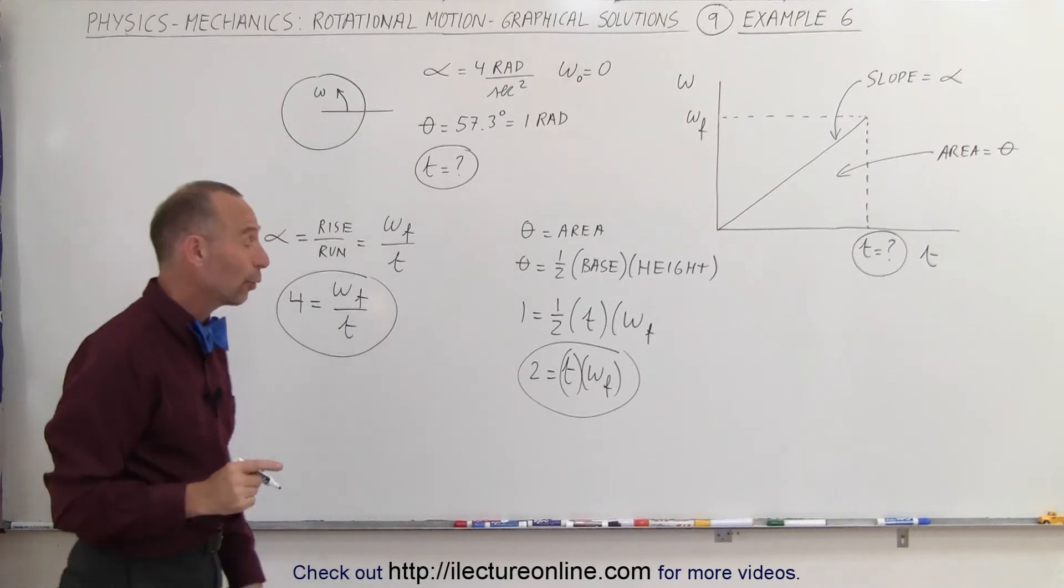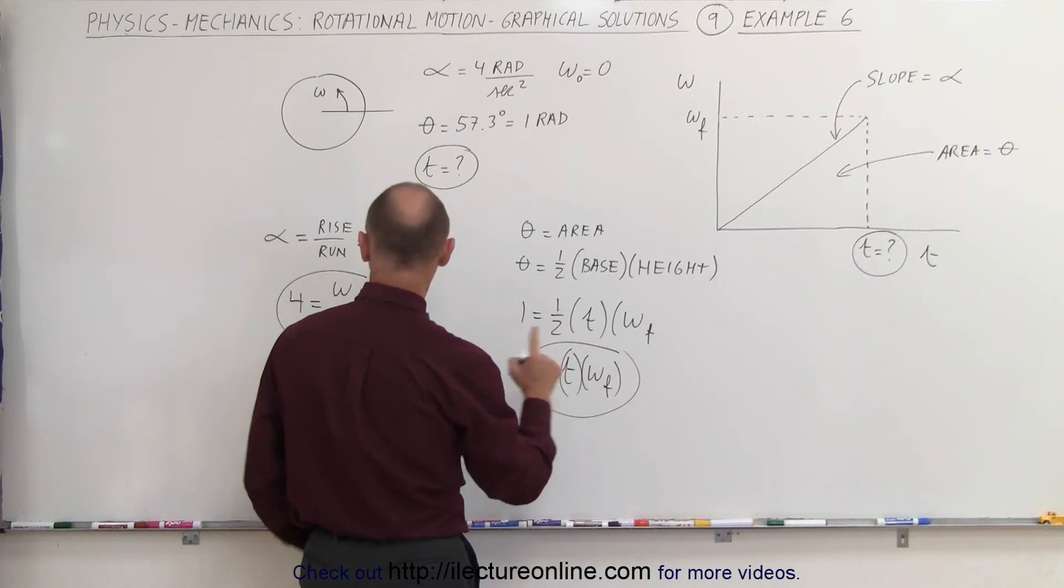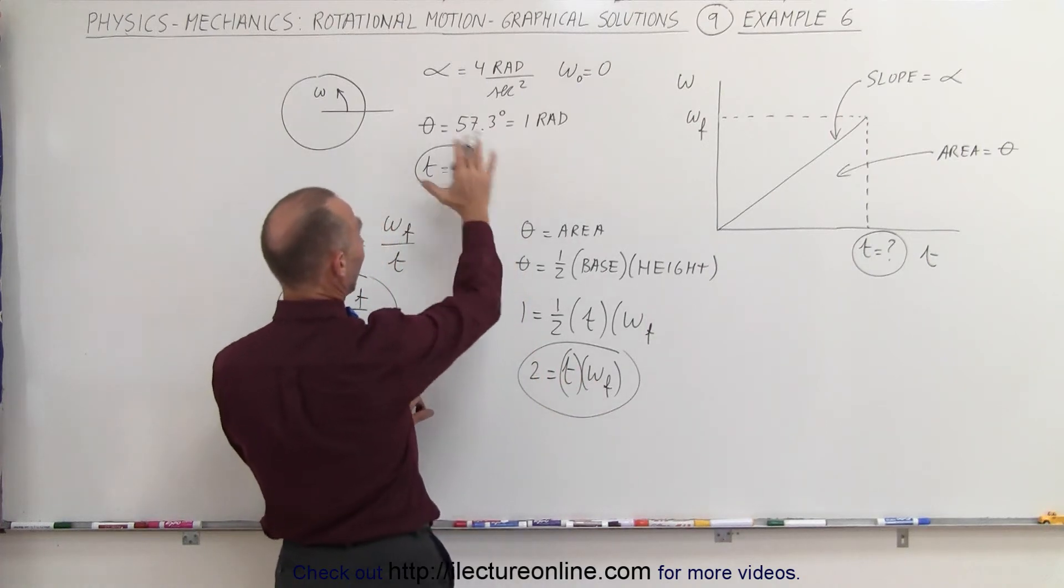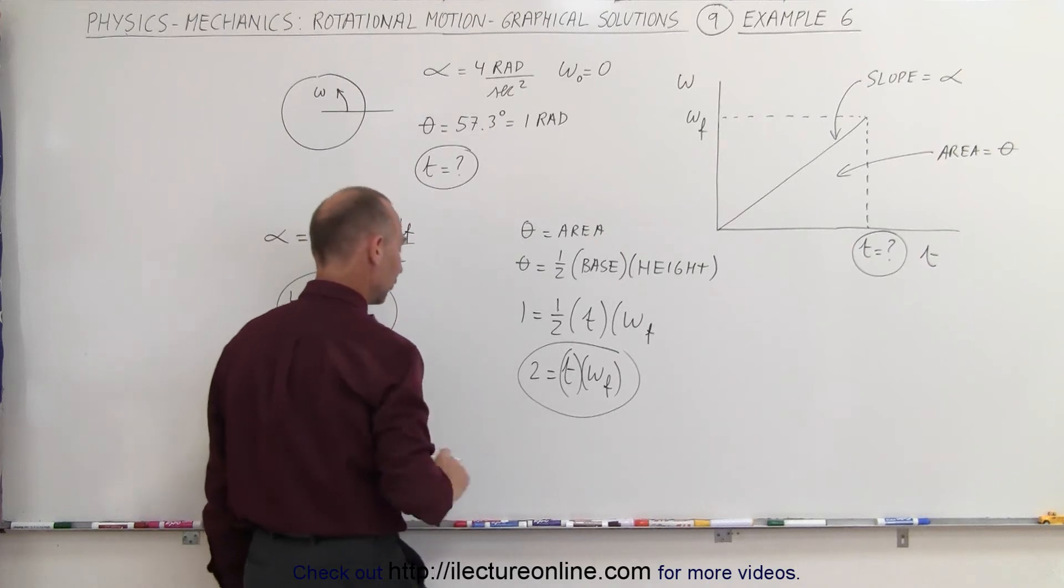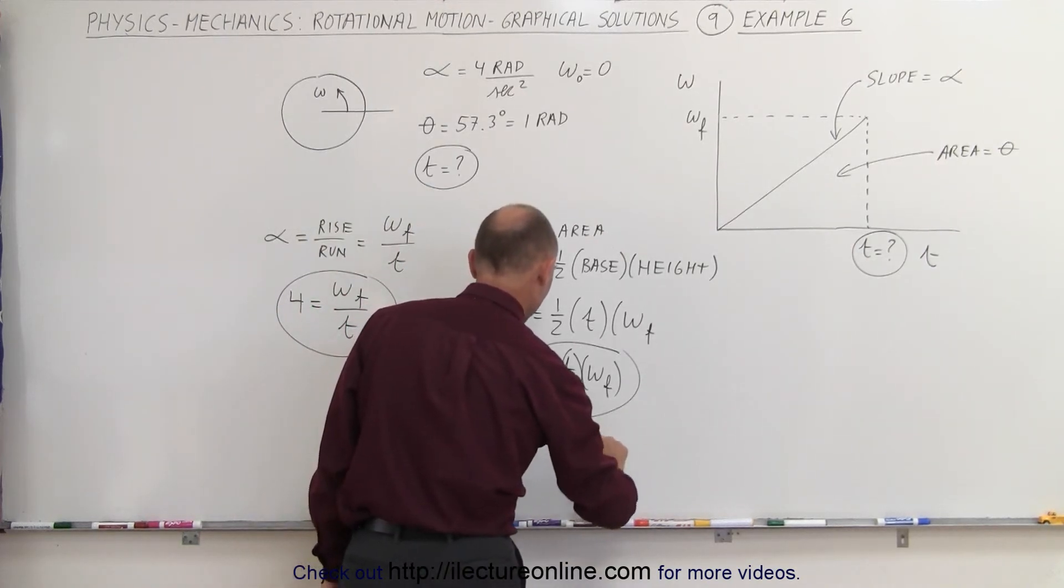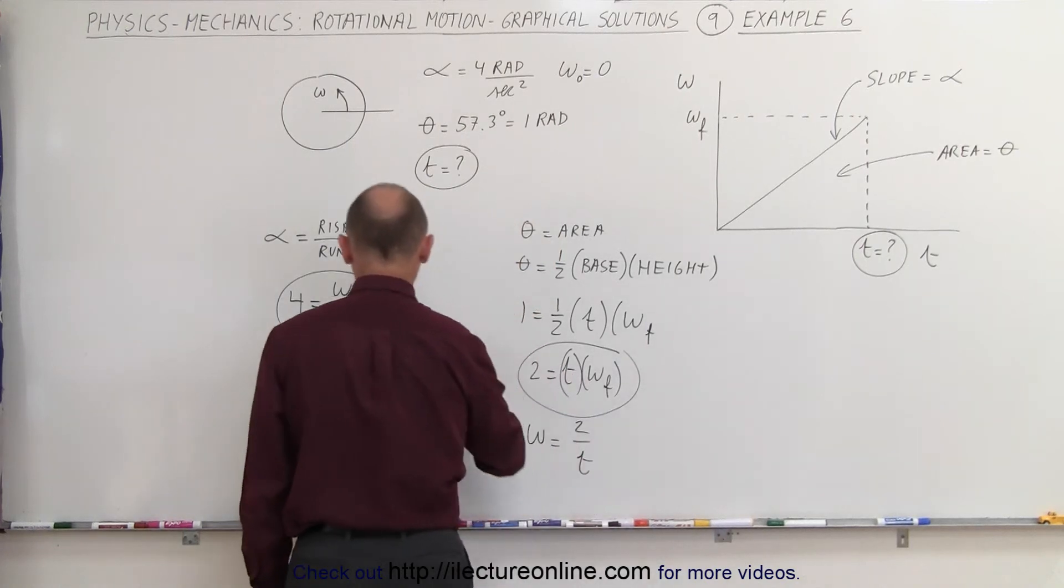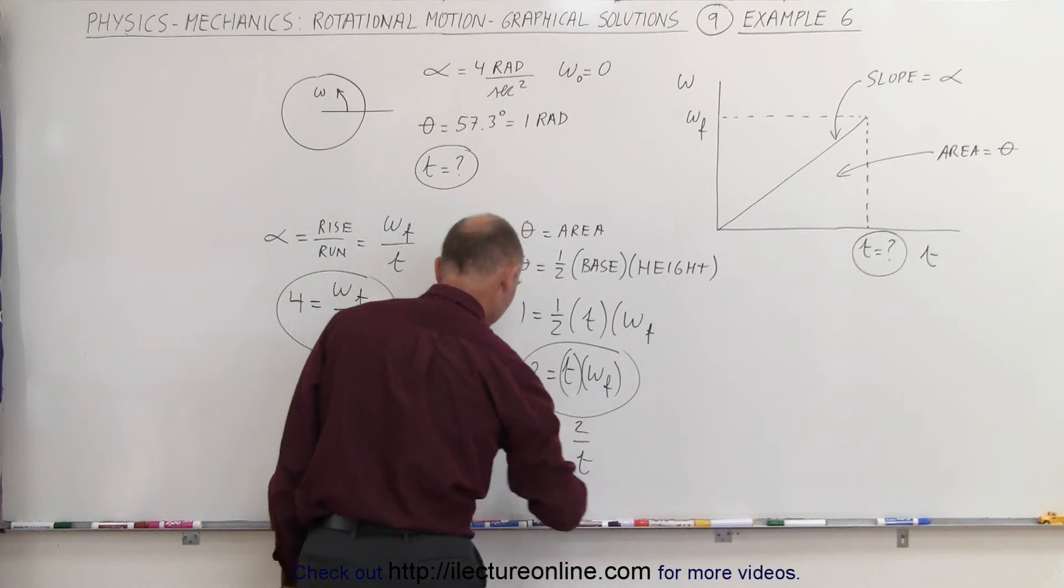Since we're looking for time, we can solve this equation for omega and plug it into the first equation. So, omega is equal to two divided by time, and let's plug that in here. That's omega final. There we go.